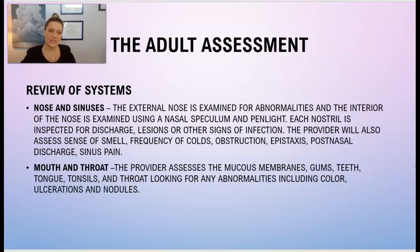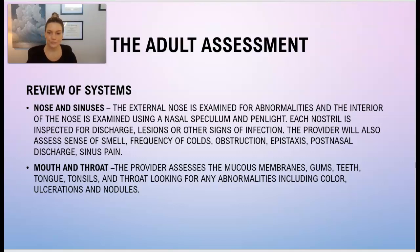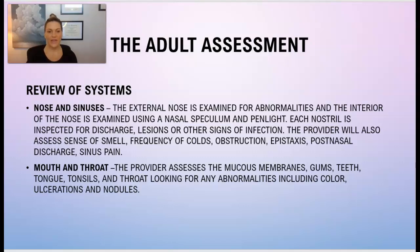Moving on to the review of systems — nose and sinuses. The nose is examined for any abnormalities using the nasal speculum and pen lights. The doctor will assess for sense of smell, frequency of colds, any epistaxis (nosebleeds), any post-nasal discharge, or sinus pain. He or she will also look at the patient's mouth and throat — looking at their mucous membranes, gums, teeth, tongue, tonsils, and throat — looking for any abnormalities of color, ulcerations, or nodules.